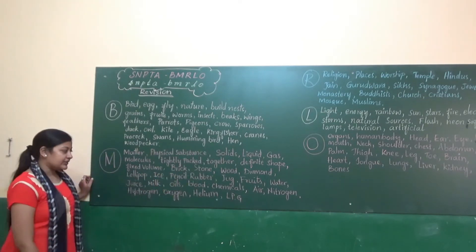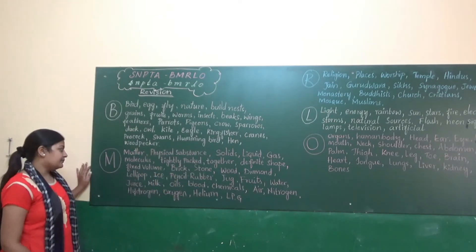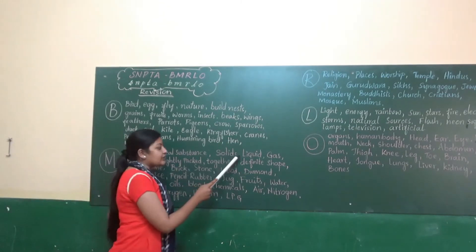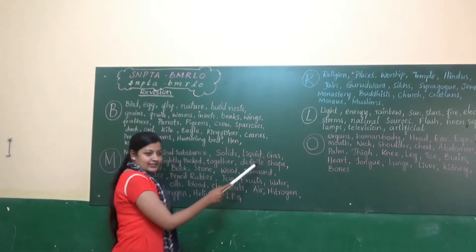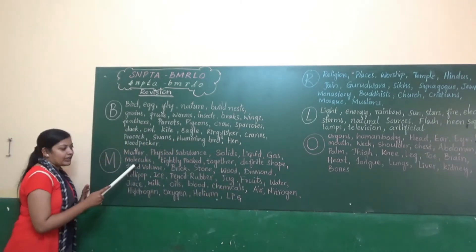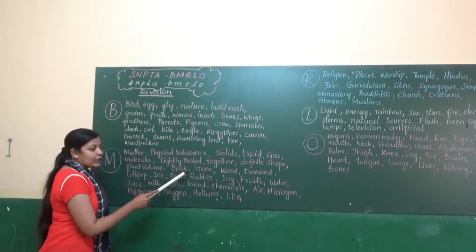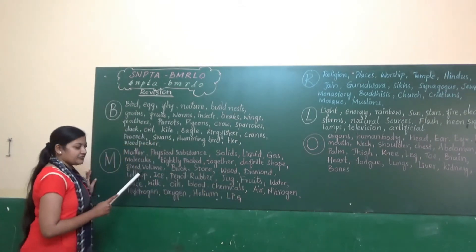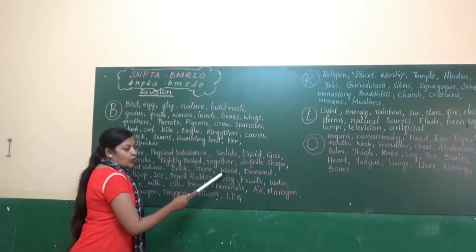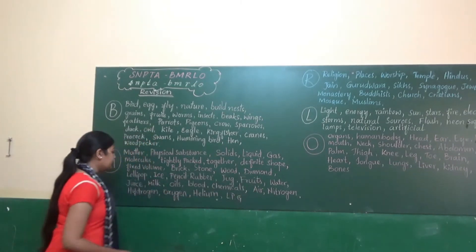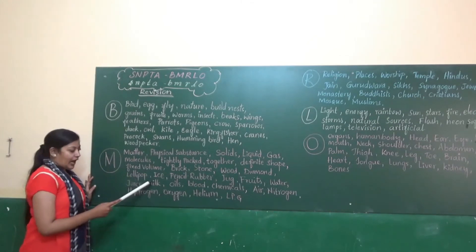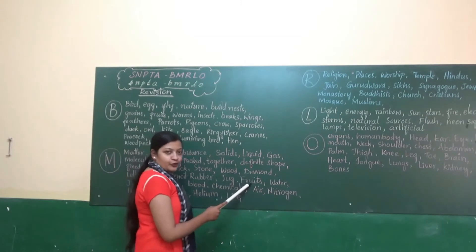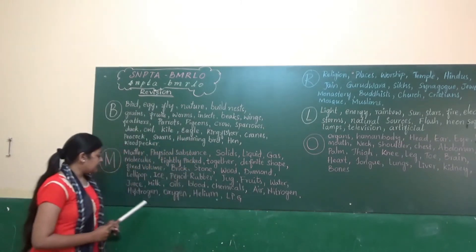Next we will go with M — Matter: physical substance. Solids, liquid, gas. Molecules tightly packed together, definite shape, fixed volume. Examples: brick, stone, wood, diamond, lollipop, ice, pencil, rubber, jug, fruits. Liquids: water, juice.